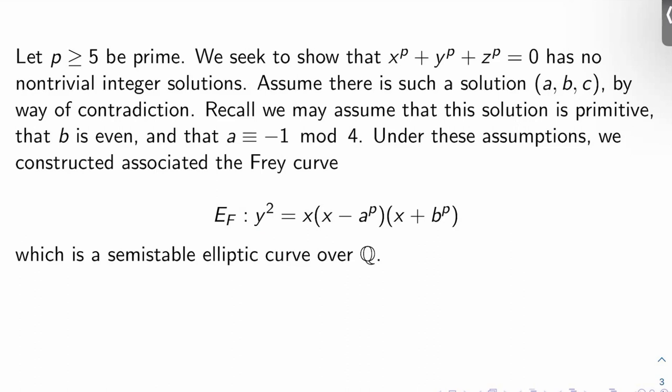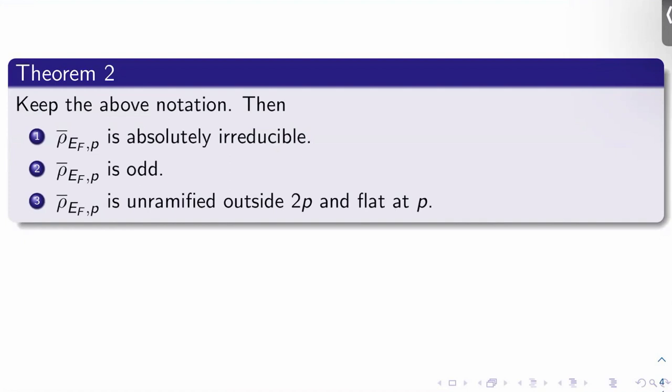And we showed this is a semi-stable elliptic curve over Q. We also computed its conductor, its minimal discriminant, and the ramification of its P torsion field. Okay, so here's the big theorem of today, theorem two. Keep all the above notation, the Frey curve, the prime P, the solution ABC, et cetera.